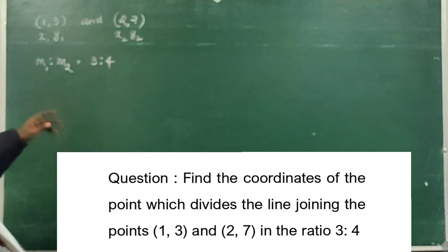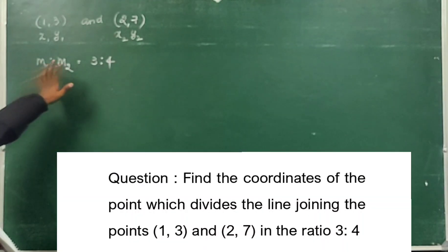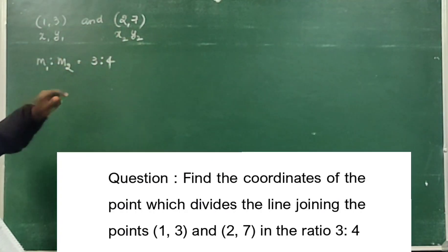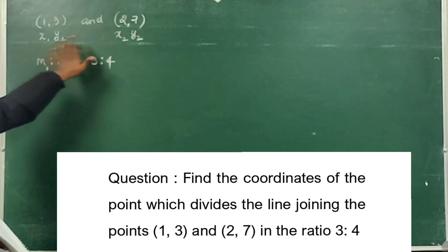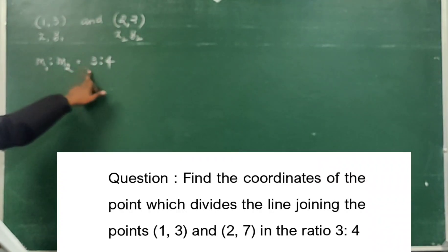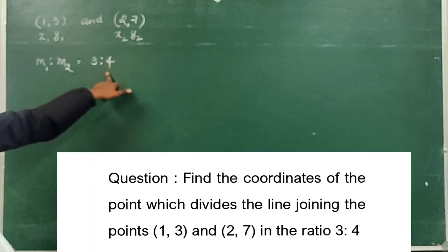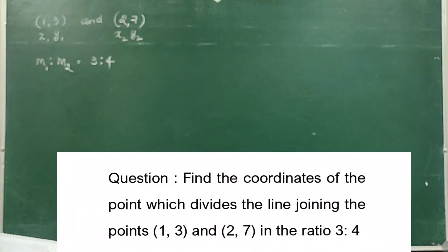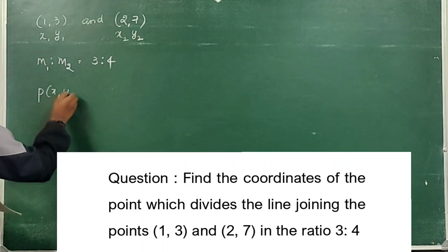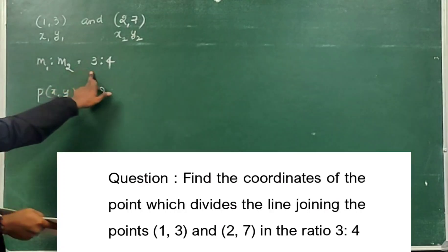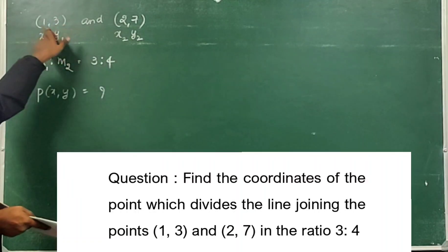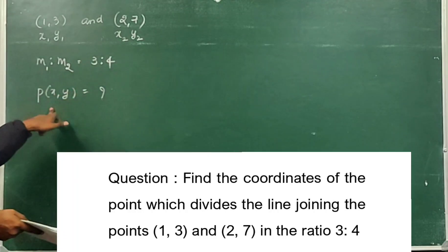The points are (1, 3) and (2, 7). The first point is x1, y1 and the second point is x2, y2. The ratio is 3 is to 4, meaning the line is divided in the ratio 3 to 4. We need to find the point P(x, y) which divides the line segment in the ratio 3 is to 4.